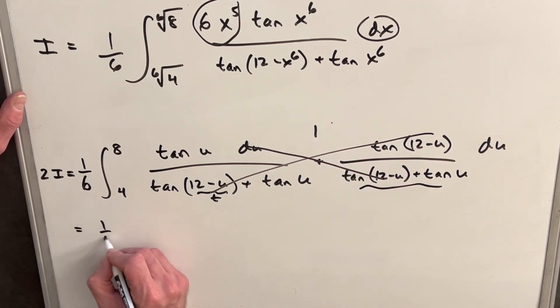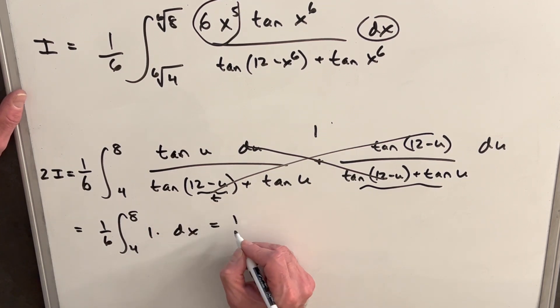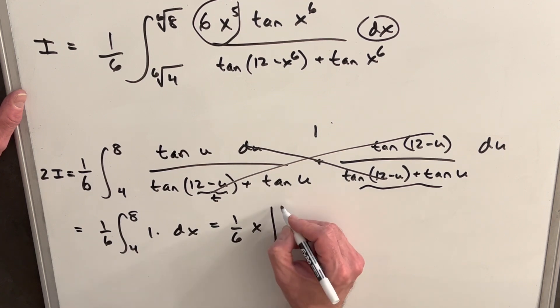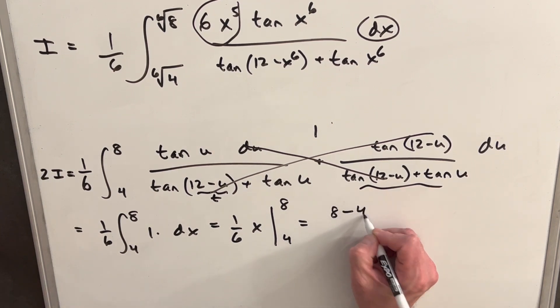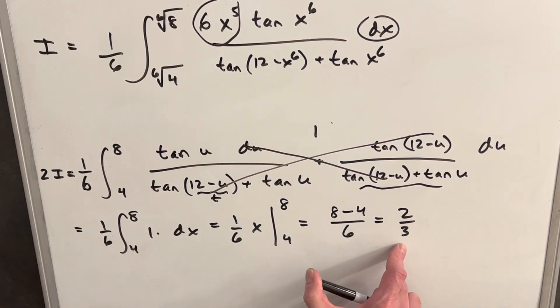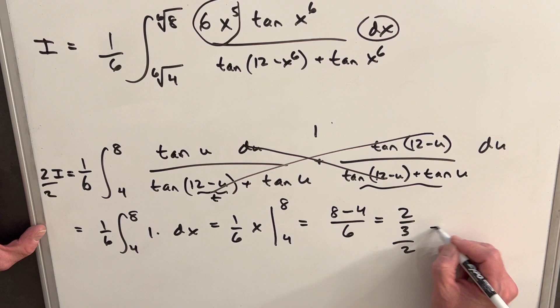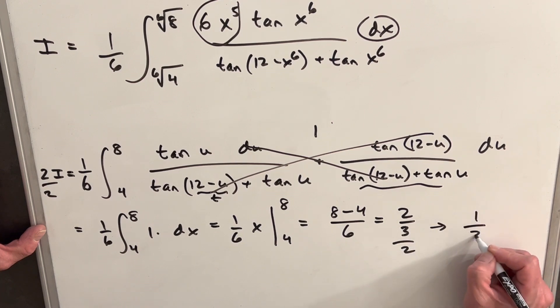And so what we're going to do is we're actually just integrating 1 dx from 8 to 4. And so this is just going to be 1 sixth x is the integral of 1 from 8 to 4. Then for just for this, we'll just have 8 minus 4 over 6. And that's going to be 2 thirds. And then just one last step, we have this, but this is two copies of our integral. So this is not our answer. But we can just divide by a 2. And so then our final answer is going to be 1 over 3.